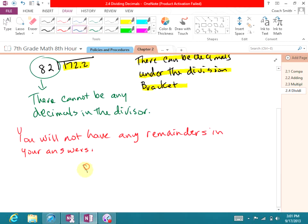So if we look at our problem here, 82 into 172.2, I said that there's not going to be any remainders in these problems, so you've got to carry them out until they terminate, until you end up with a zero remainder. You will not have any repeating decimal numbers in these answers. So if you get something that repeats, you've done something wrong.